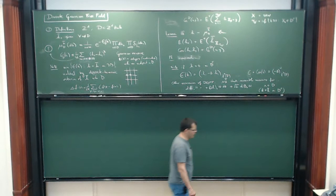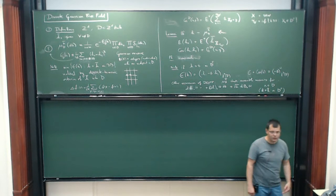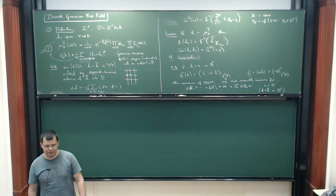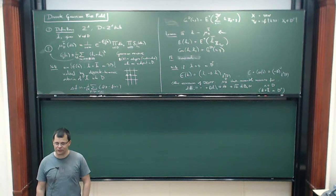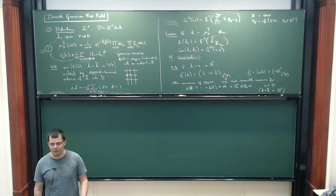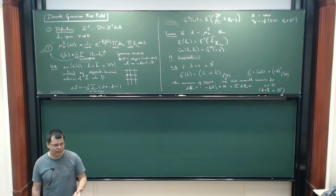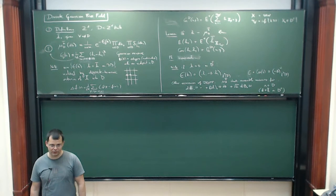When you talk to physicists about the Gaussian free field, they'll say it's trivial because it's a Gaussian model — all basic covariance functions are readily available. For the perspective of interacting field theory, this is the trivial case. But what happened in the last 15 years in probability is that mathematicians proved the physicists wrong: there are many interesting effects that were overlooked. These require talking about pathwise properties, which are not visible at the level of the correlation function.